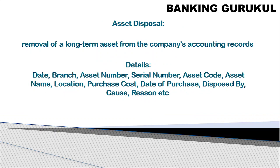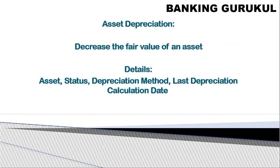Asset disposal means the removal of long-term assets from company records. For example, a computer may be beyond repair, or after 10 years of use you want to dispose of it and remove it from company records. At disposal, any remaining asset value after accumulated depreciation is fully expensed, and the asset is brought to zero and removed from records. Details captured during disposal include: date, branch, asset number, serial number, asset code, asset name, location, purchase cost, date of purchase, disposed by whom, and the reason for disposal — whether damaged, not working, or obsolete.